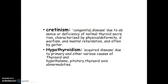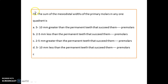What is the difference between cretinism and hypothyroidism? In cretinism there is a congenital disease due to absence or deficiency of normal thyroid secretion, characterized by physical deformity, dwarfism, and mental retardation. Hypothyroidism, on the other hand, is an acquired disease caused by any thyroid, hypothalamic, or pituitary abnormalities.